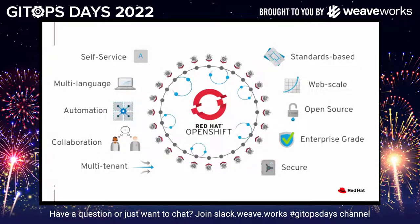OpenShift — the OpenShift Container Platform — provides a way that highlights all these different areas and more. It's a container orchestration platform built on Kubernetes, but it has a lot of features out of the box. It has self-service capabilities, supports multiple languages, and brings together different parts of organizations in a collaborative fashion. A lot of it comes down to security: it enables multi-tenancy, and it is secure and enterprise grade by default. There is no vendor lock-in because it's open source, leveraging familiar technologies like Kubernetes, Fluentd, Kibana, Prometheus, and more.